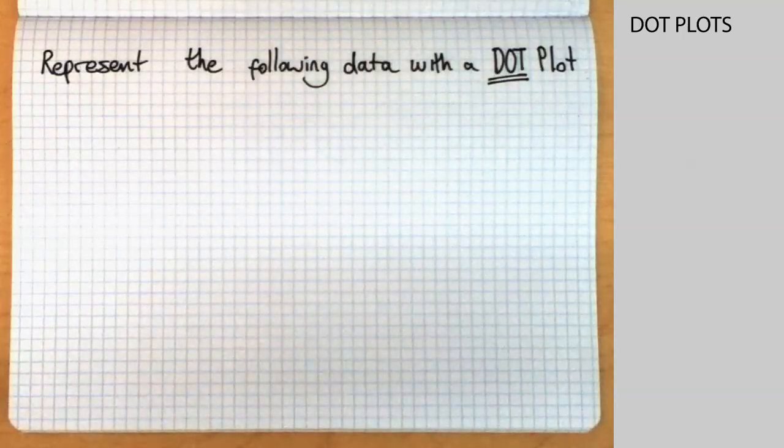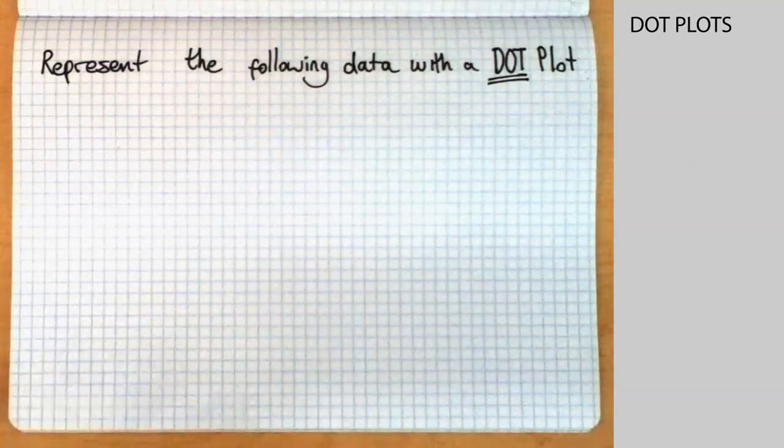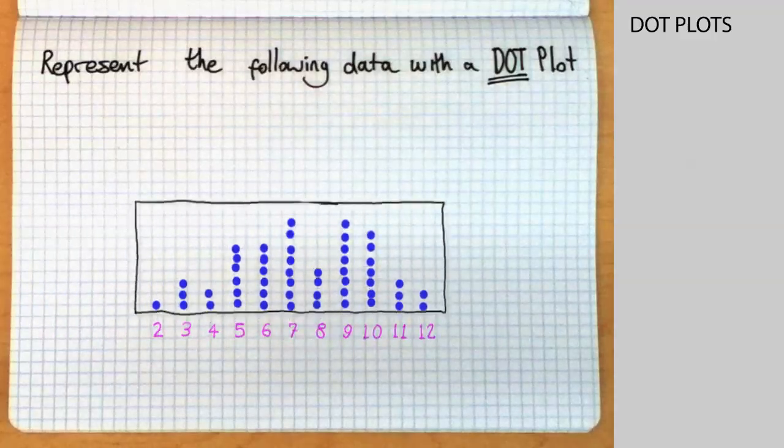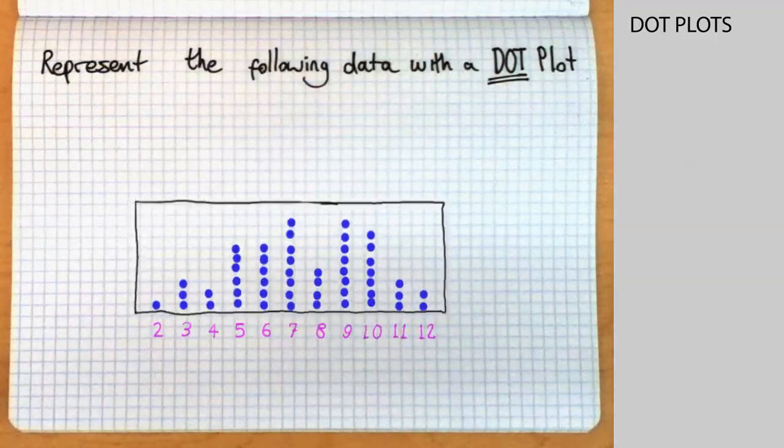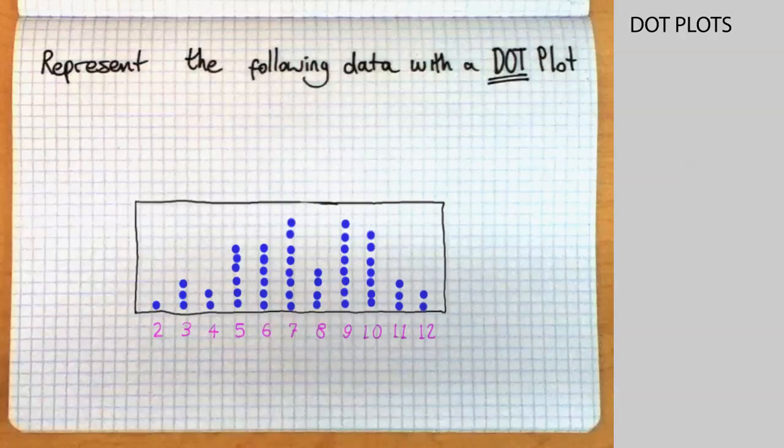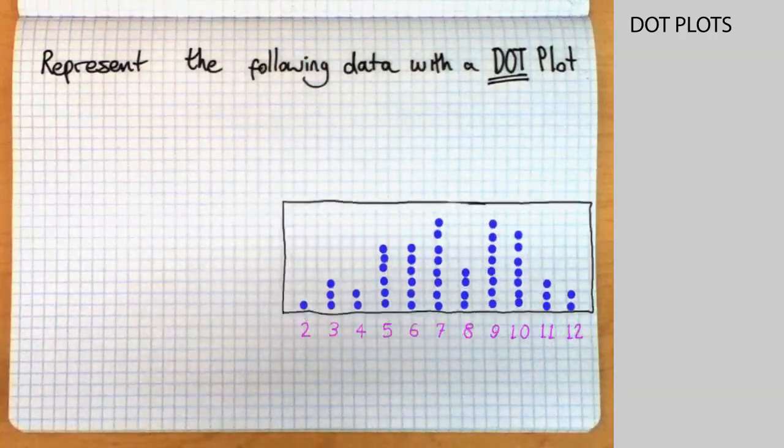We're going to represent the following data with a dot plot. A dot plot is a very useful way of plotting fairly simple data. Basically, at every point on the number line, we put a dot whenever we get a data point there.